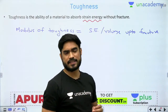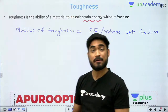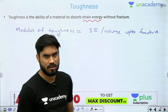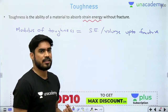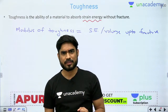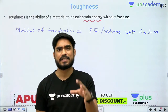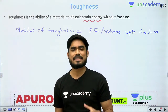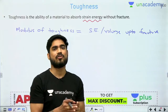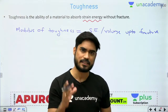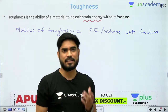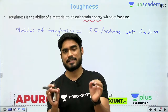Now the question is why this property is important — what is the significance of toughness? When a material is subjected to static load, how much load it can sustain depends upon the static strength — yield strength and ultimate strength. The higher the yield or ultimate strength, the more static load it can sustain.